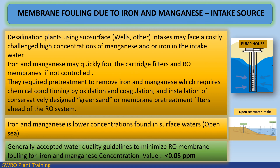Desalination plants using subsurface wells or other intakes may face a costly challenge of high concentrations of manganese and/or iron in the intake water. Iron and manganese may quickly foul the cartridge filters and RO membranes if not controlled, requiring pretreatment by oxidation, coagulation, and installation of conservatively designed greensand or membrane pretreatment filters ahead of the RO system. Iron and manganese in lower concentrations are found in surface waters. The generally accepted water quality guideline to minimize RO membrane fouling is an iron and manganese concentration of less than 0.05 ppm.